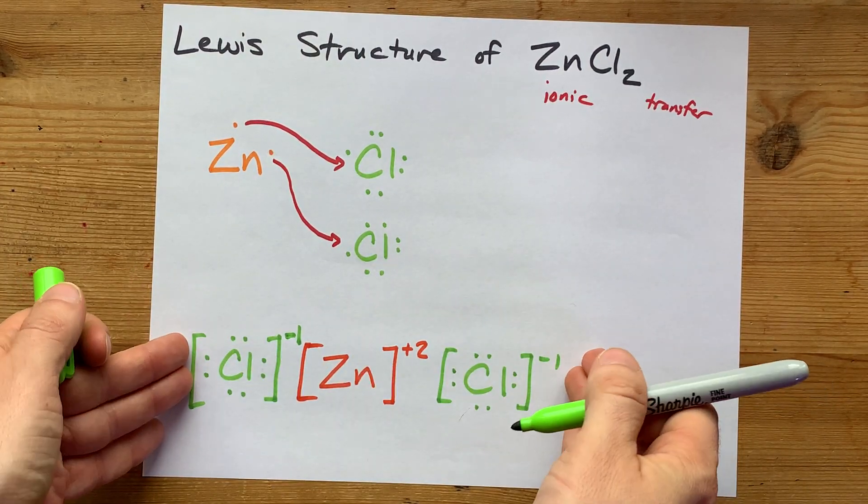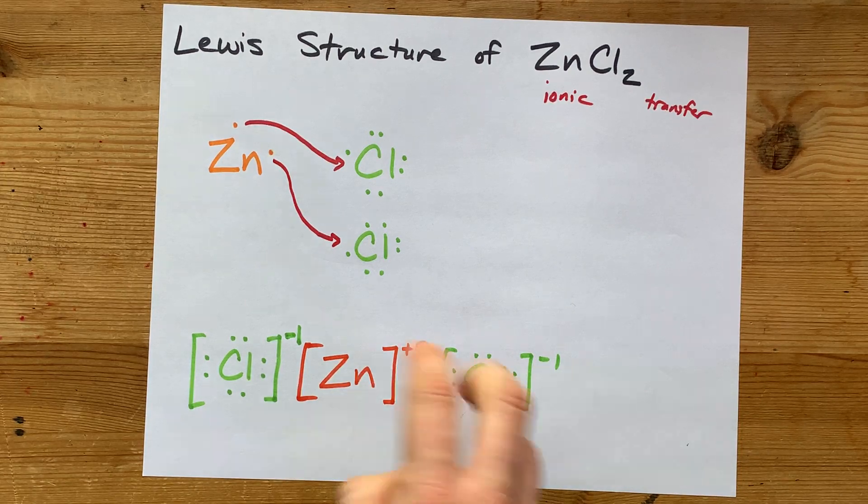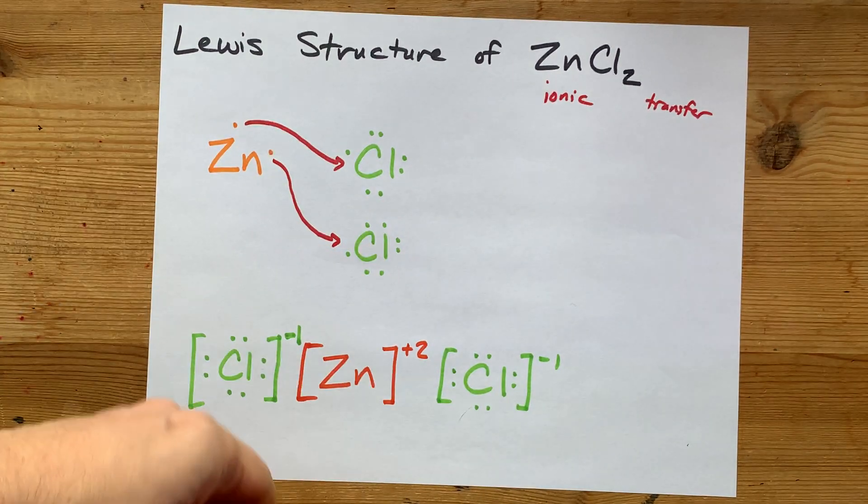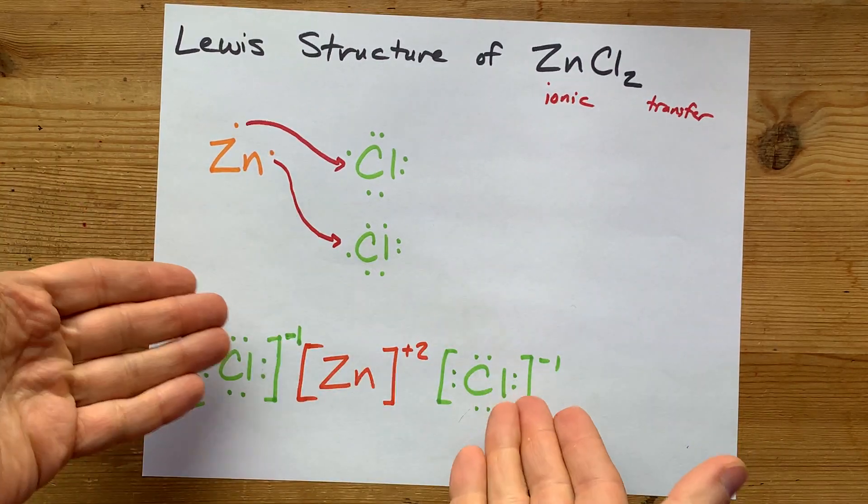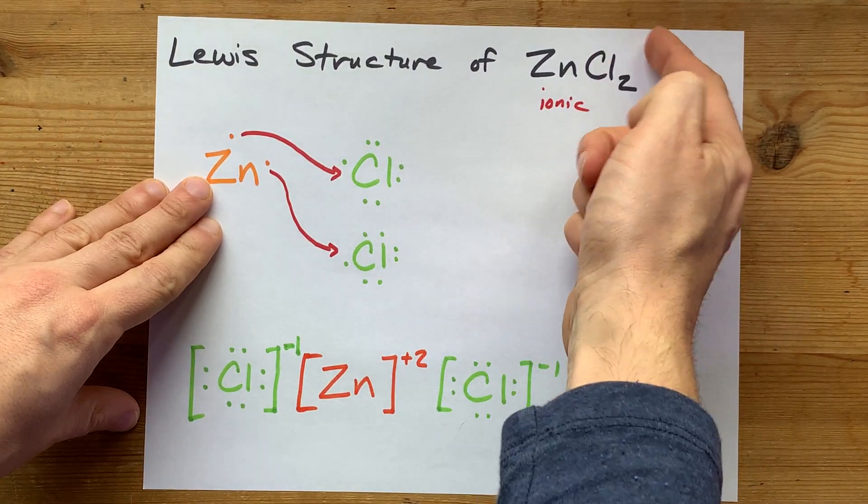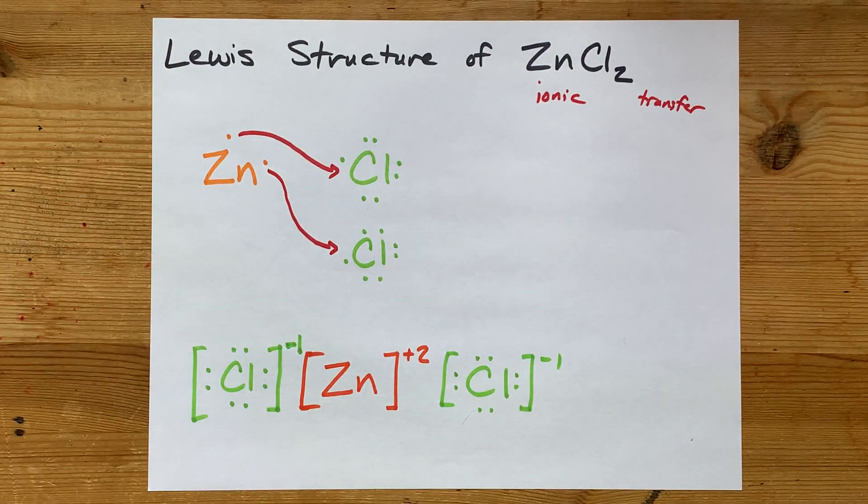That is the complete Lewis structure for zinc chloride. You've got your plus two ion in the center and two minus one ions. Notice that those charges all add to zero, just like the total charge on the particle is zero. Congratulations!